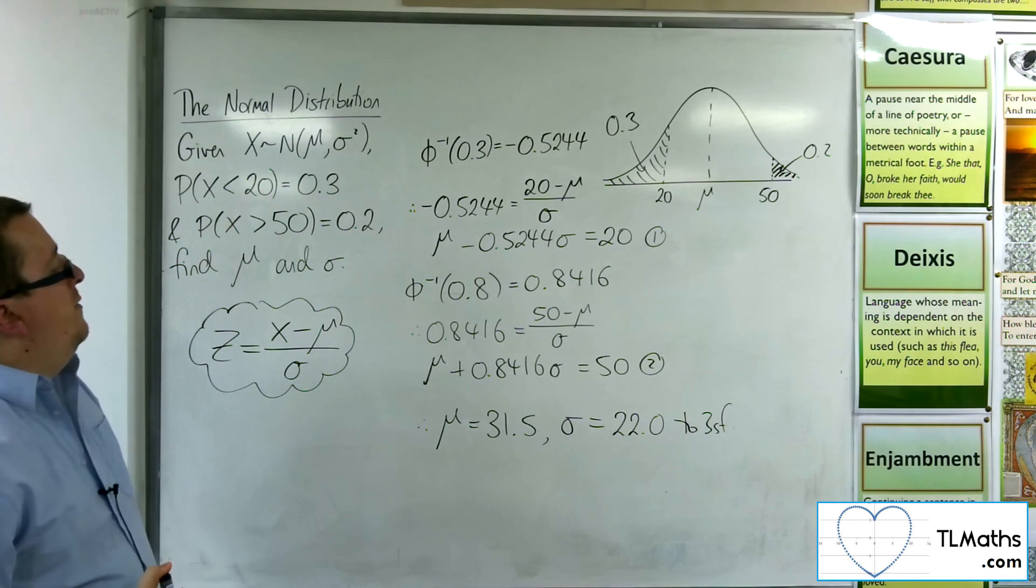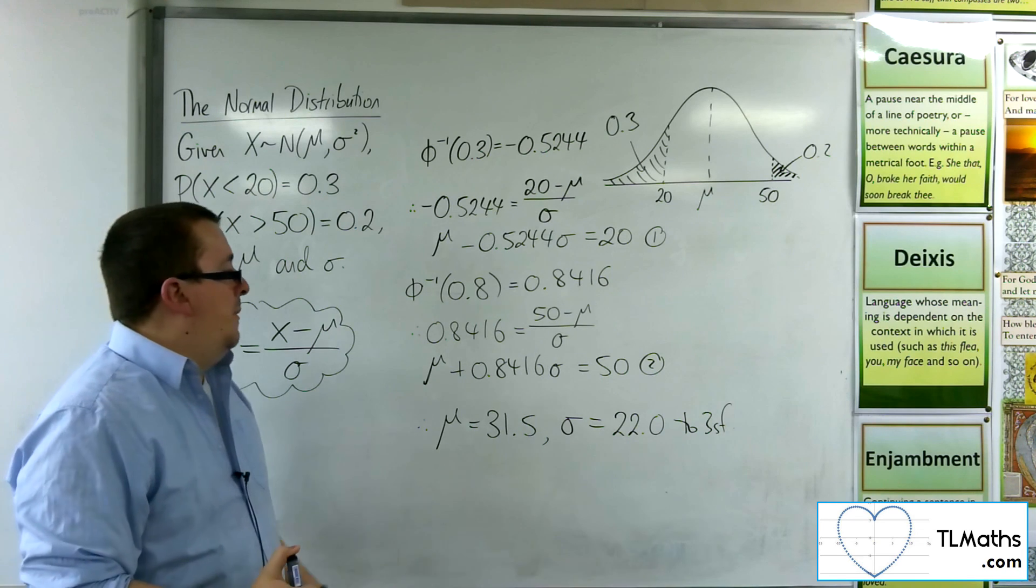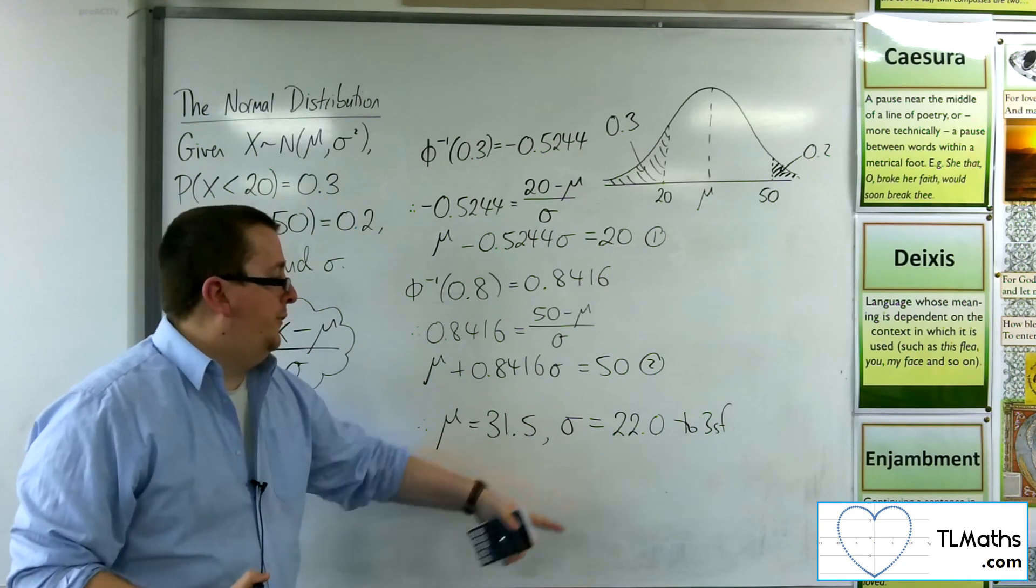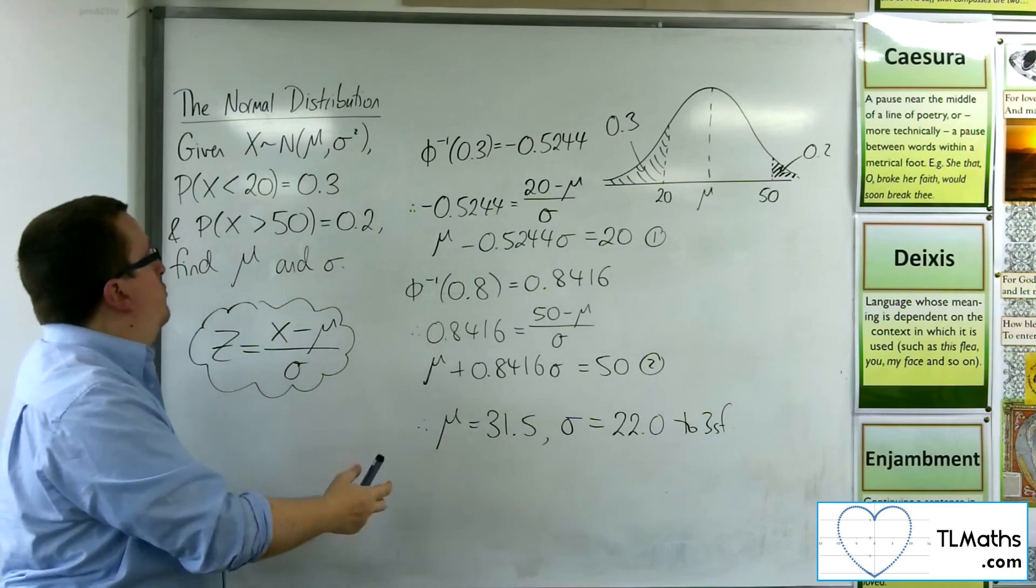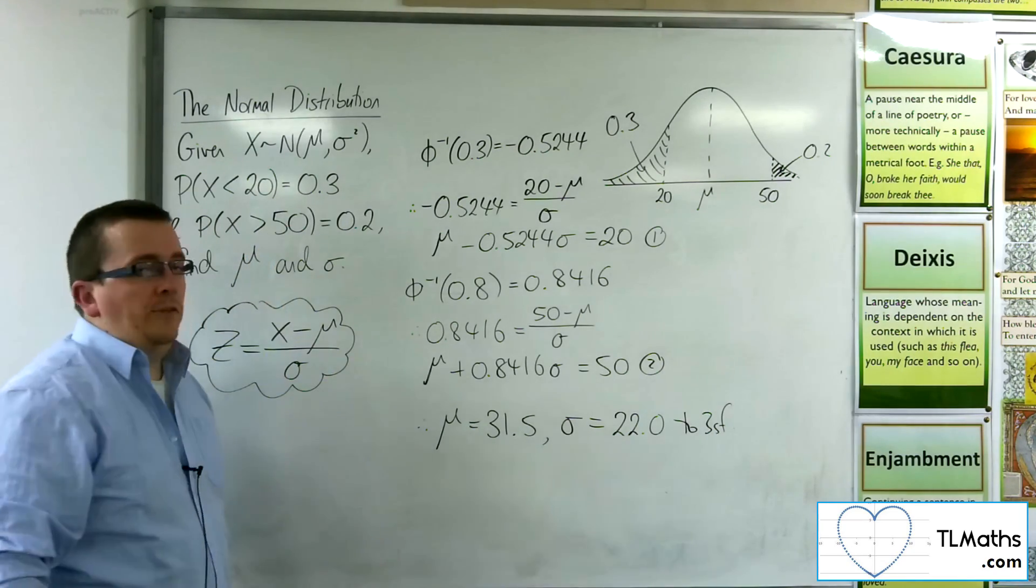So there is my μ and σ that solve the original problem allowing for these two bits of information.